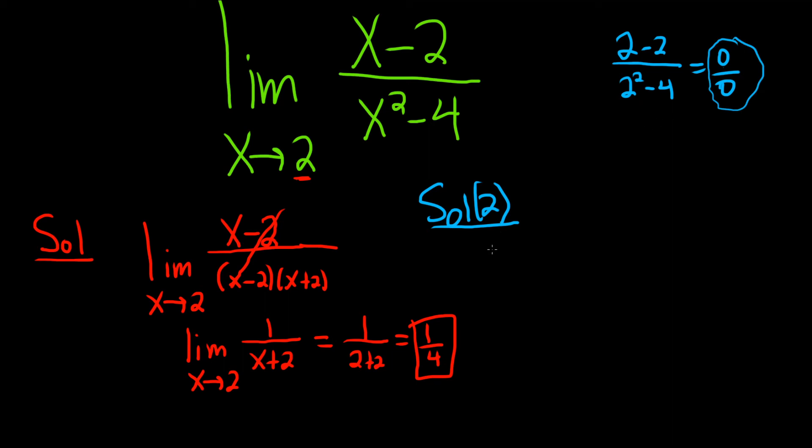Whenever your limit has this form, you can use something called L'Hopital's rule. So L'Hopital's rule says that whenever you get 0 over 0 like this, you can do the following.